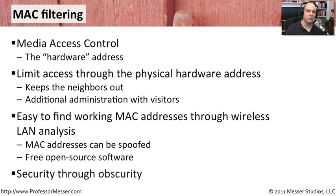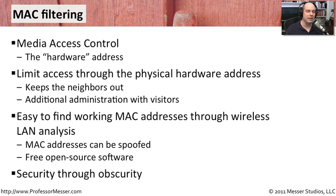We call that security through obscurity, and in reality that is not security at all. There's no real security if all you're doing is trying to hide something that somebody could very easily find out. It's only going to protect you from people who don't want to get into your network to begin with. So don't use MAC layer filtering as the only security method — layer it on along with all of the other things that you're doing.